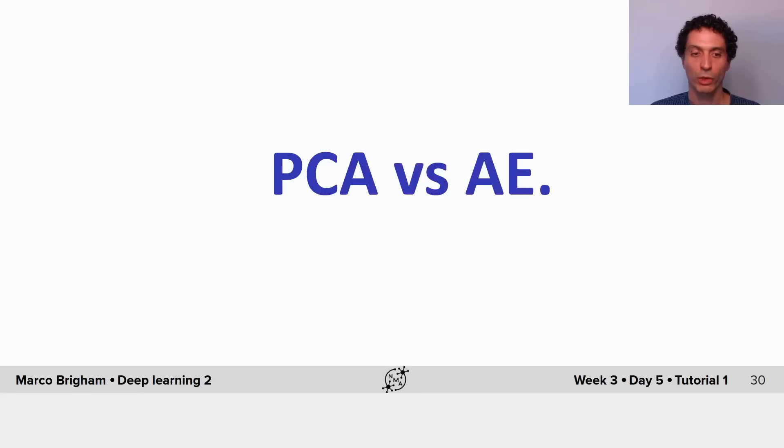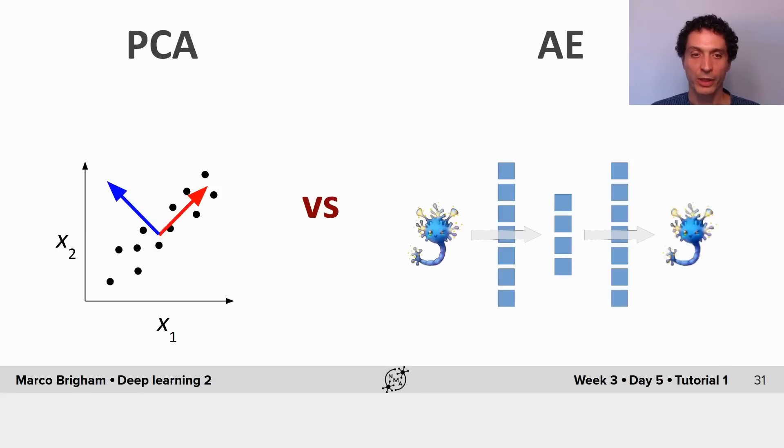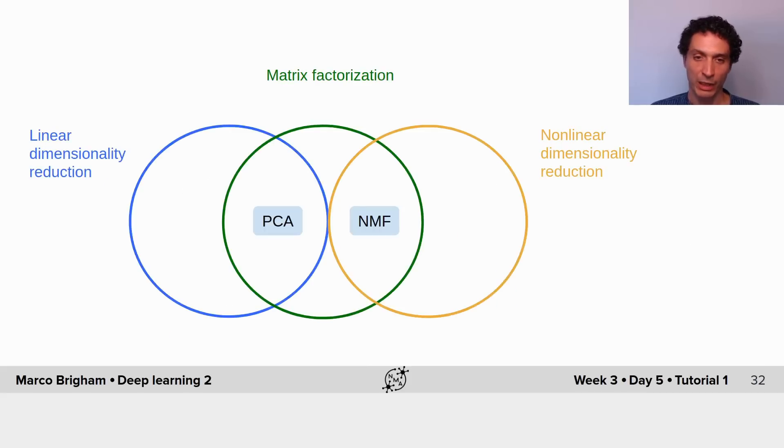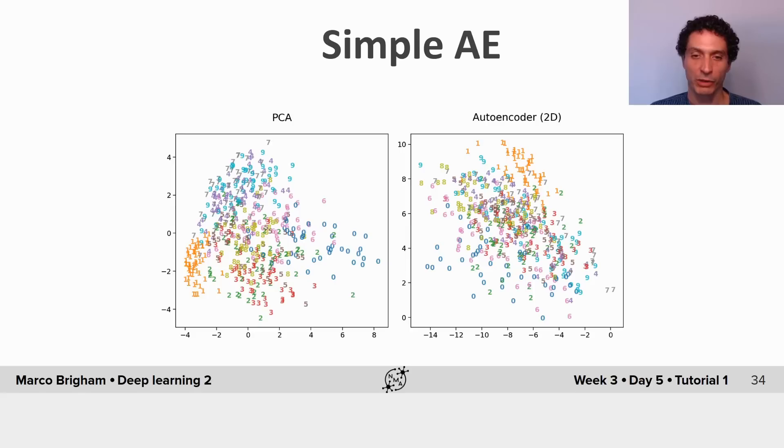Now we'll compare PCA with our shallow autoencoder. These are two very different techniques and coming back to this scheme, the autoencoder is a purely non-linear dimensionality reduction technique but after comparison we see that results are very similar.